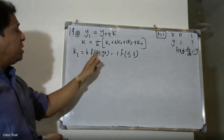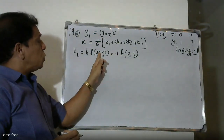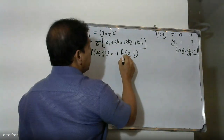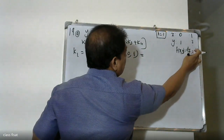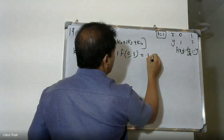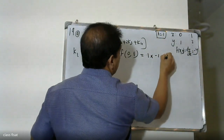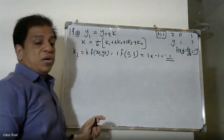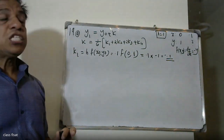x0 = 0, y0 = 1. Now computing k1: k1 = h · f(x0, y0) = 0.1 · f(0, 1) = 0.1 · (-1) = -0.1. So k1 = -0.1.